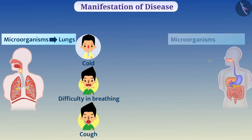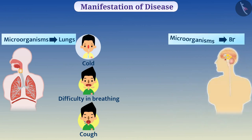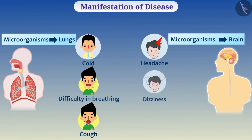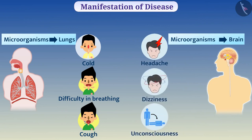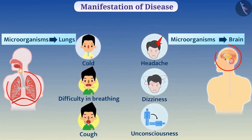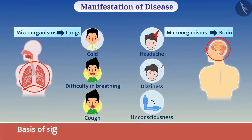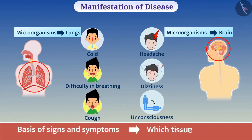Similarly, if the liver is the target, then the symptom will be jaundice. When the target is the brain, the symptoms will be headache, dizziness, and unconsciousness. Therefore, the signs and symptoms of disease depend on the organ or tissue which the microbe targets. That is why, on the basis of signs and symptoms, we can know which tissue is the target.